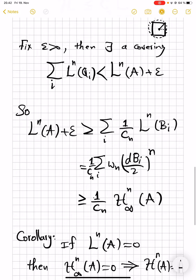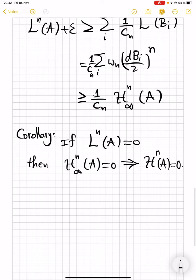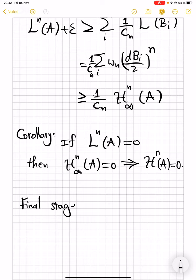Okay, now that we have the weaker inequality that takes care of null sets, we are ready to prove that we can take c_n to be 1. We want to prove that for every set A, H^n_∞ of A is less than L^n_∞ of A.